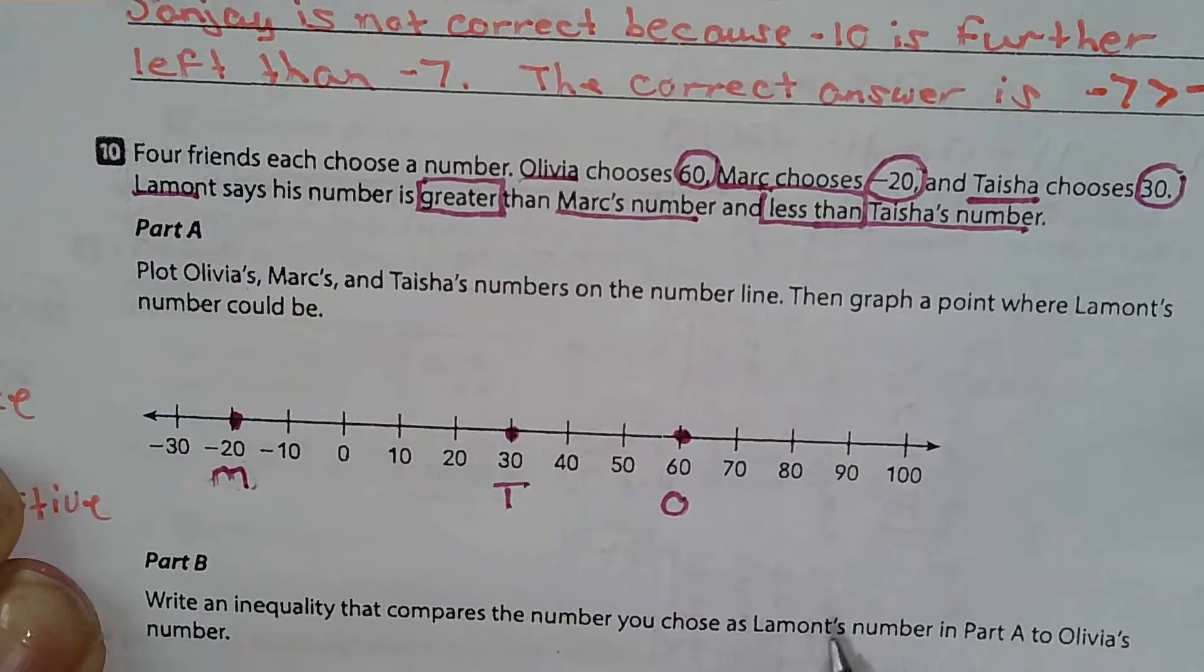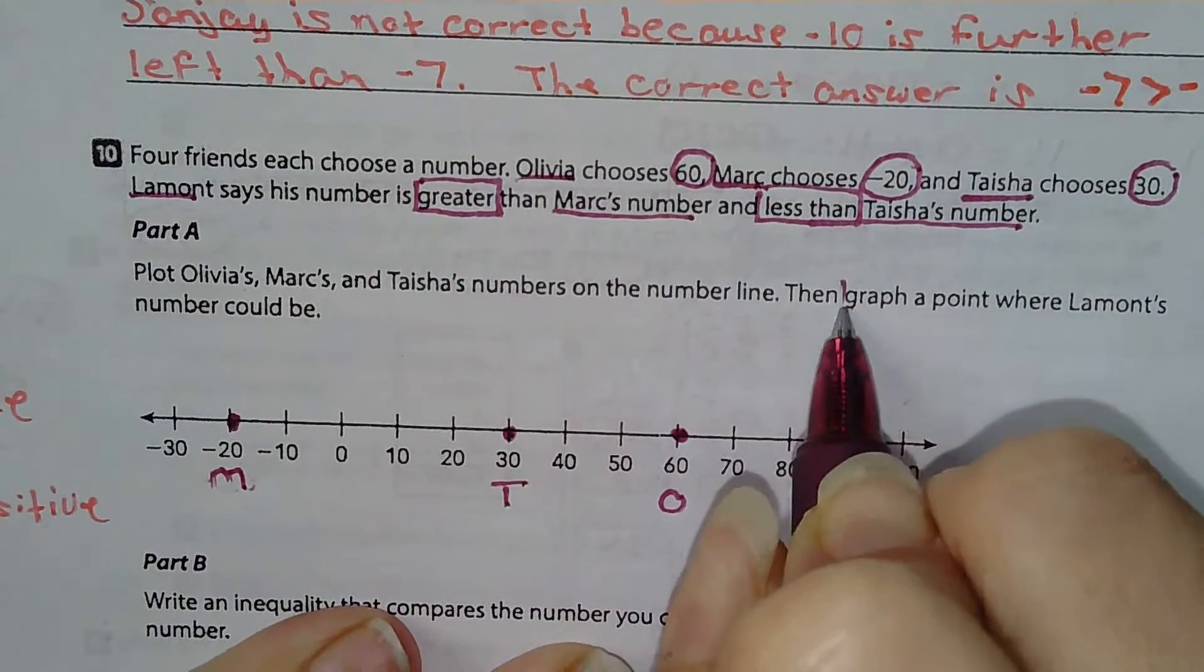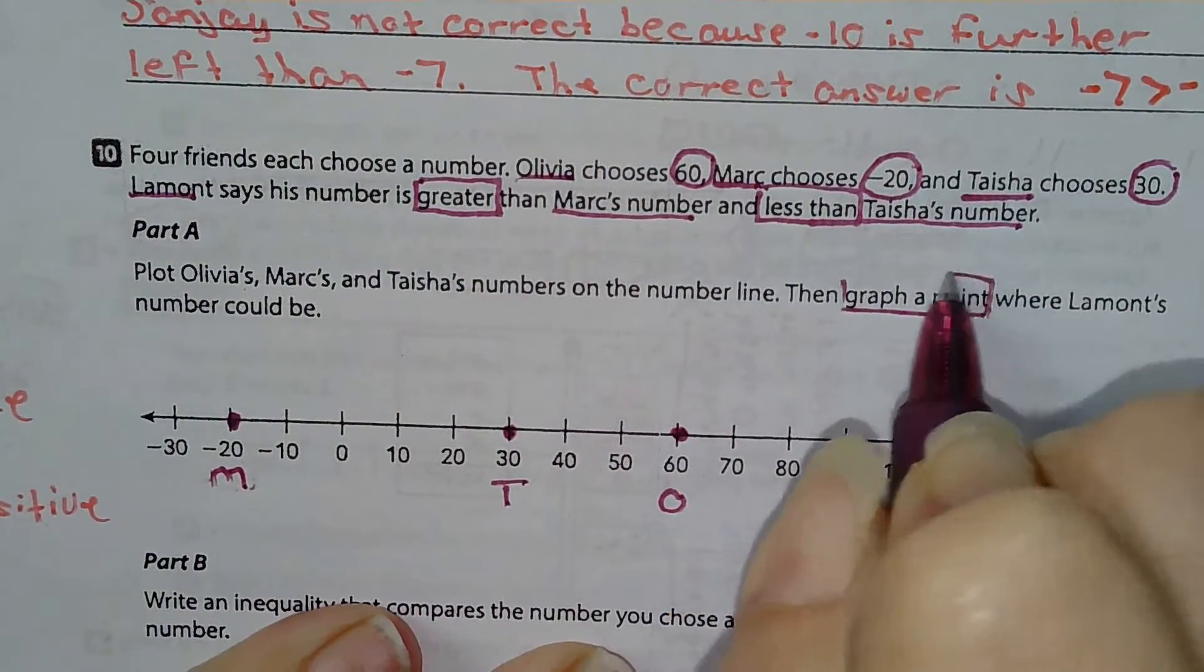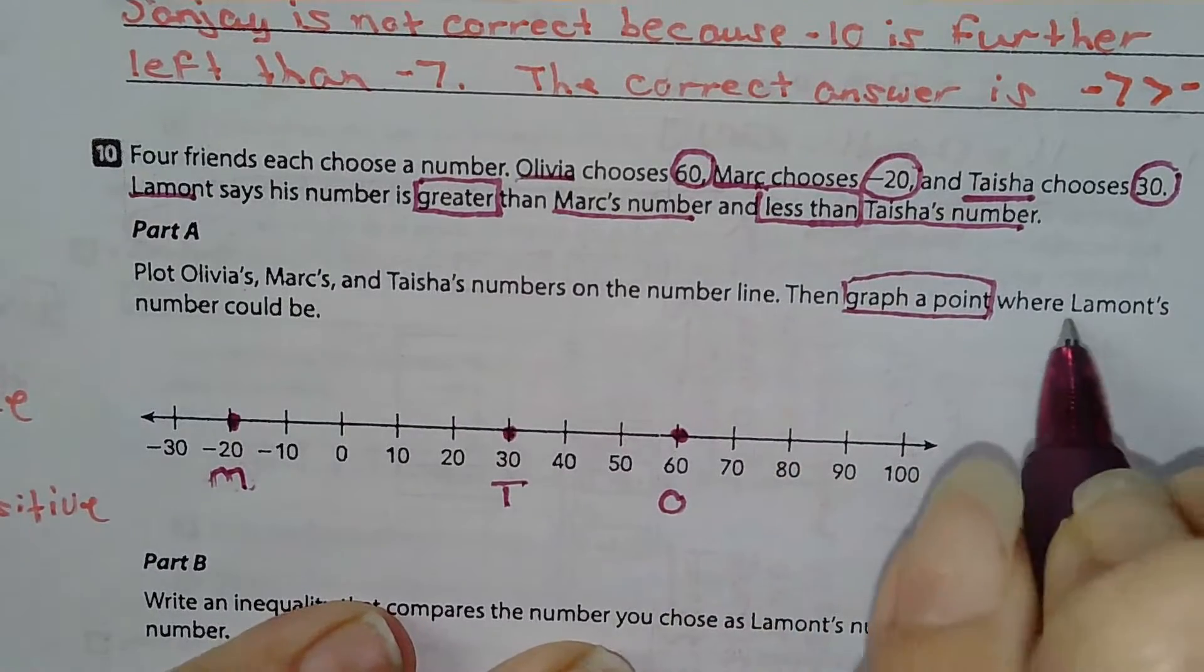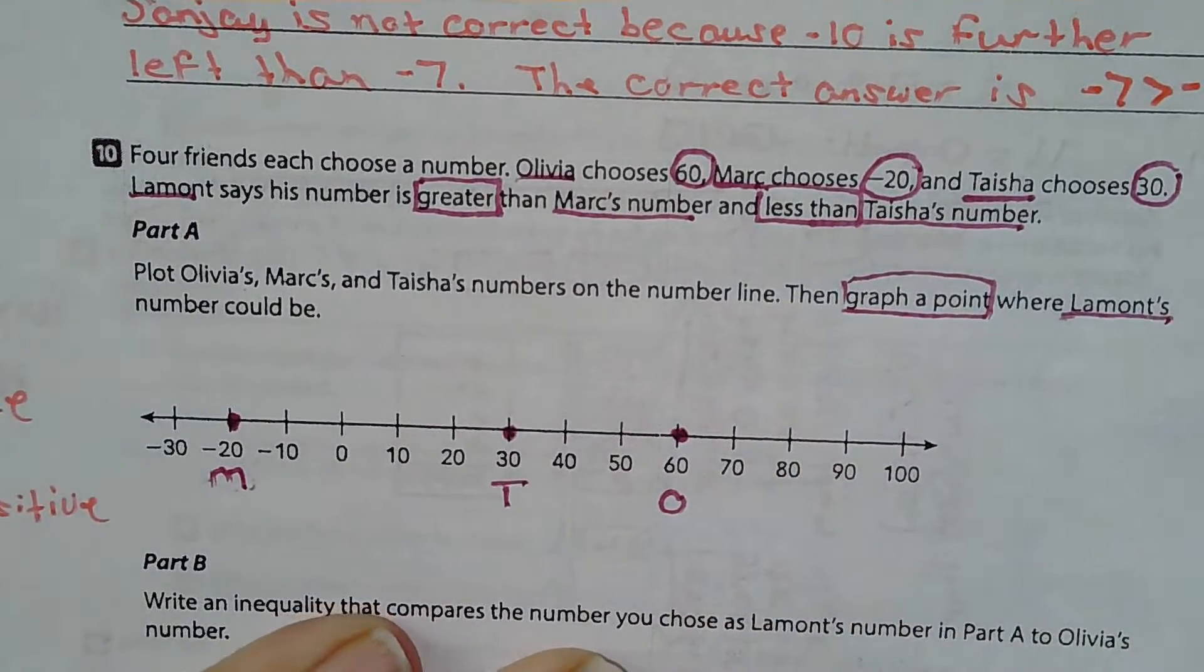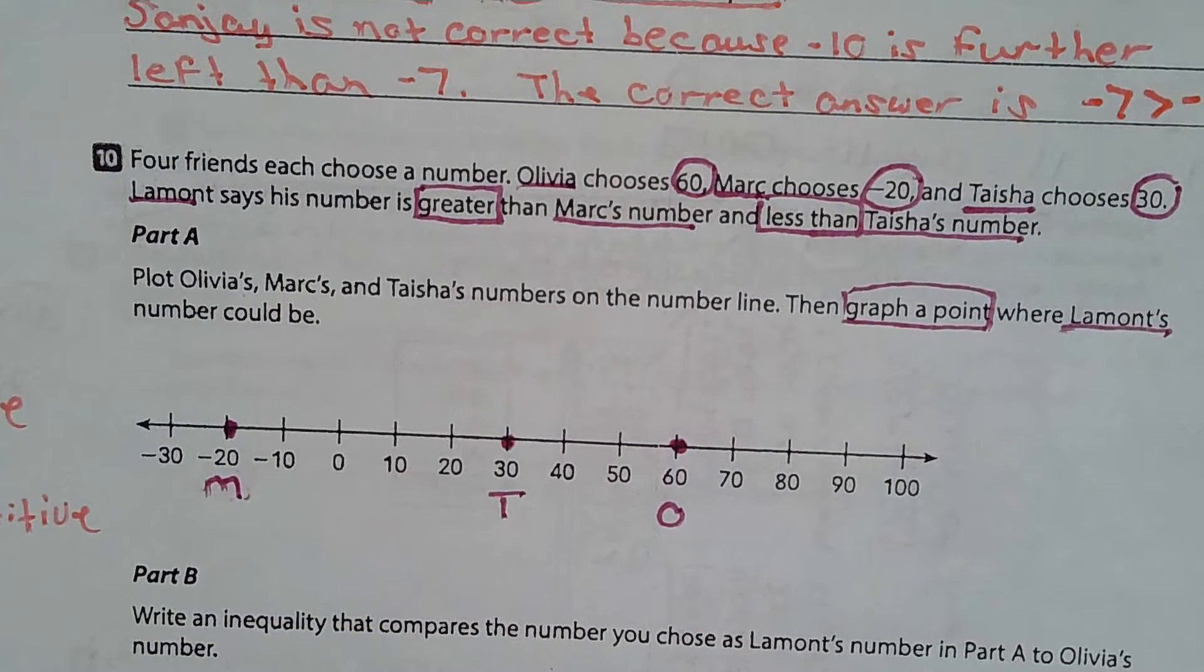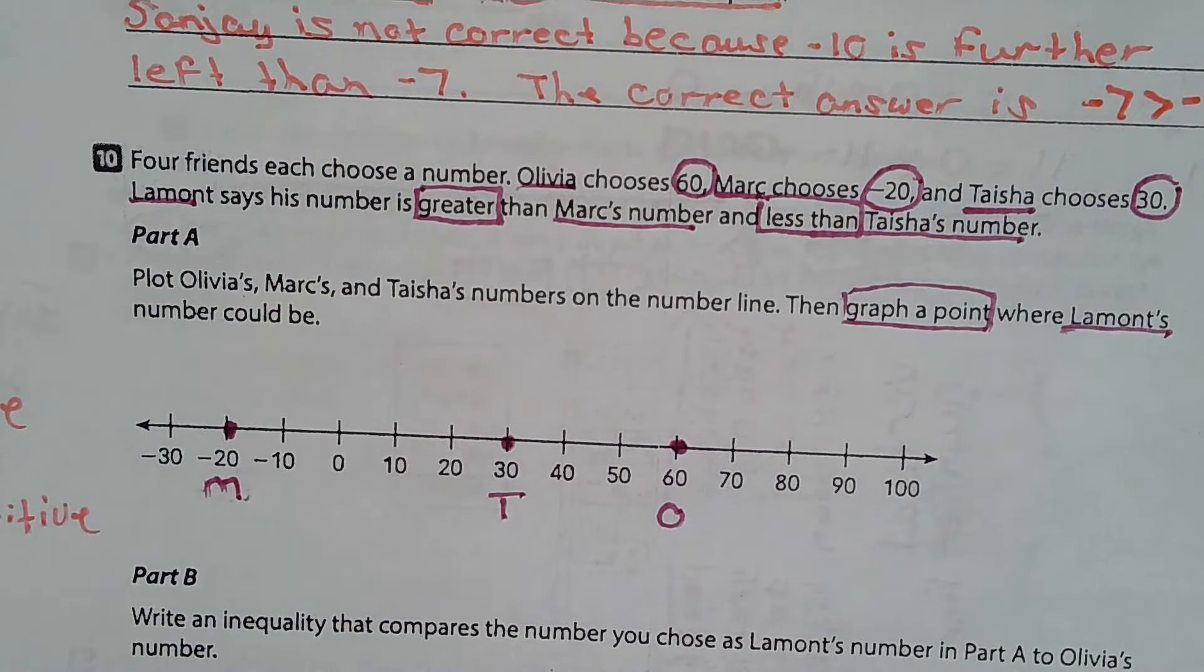Now I need to graph a point where Lamont's number could be.